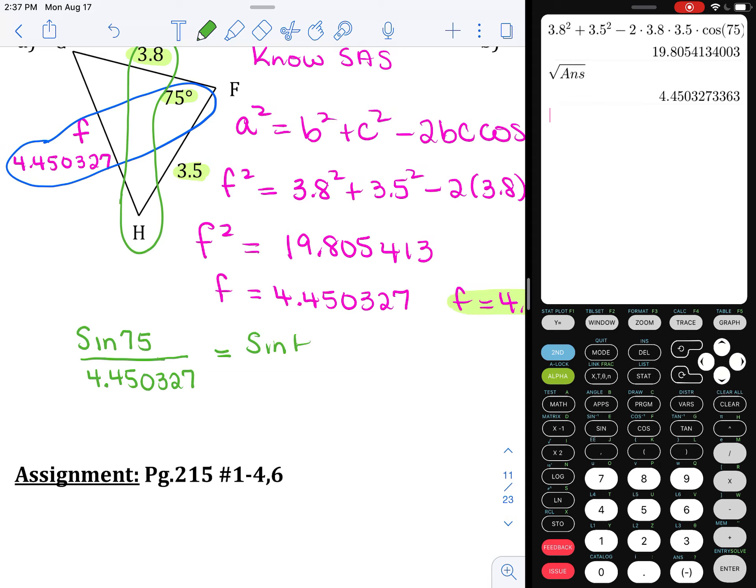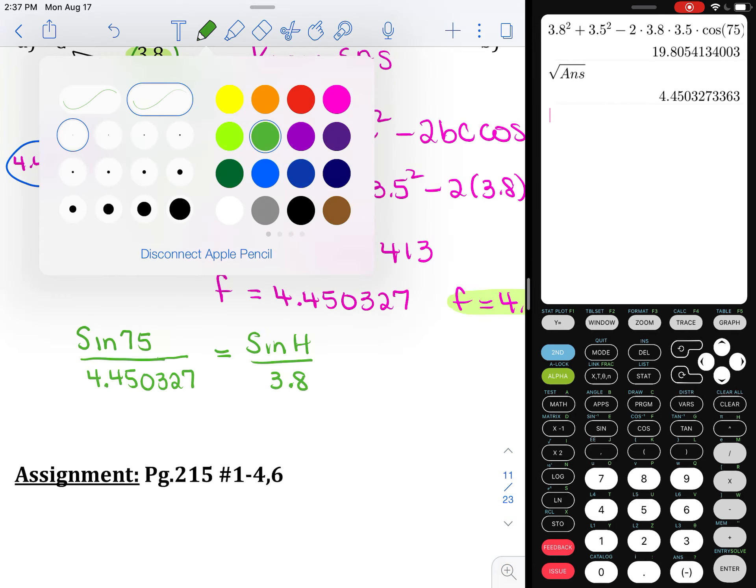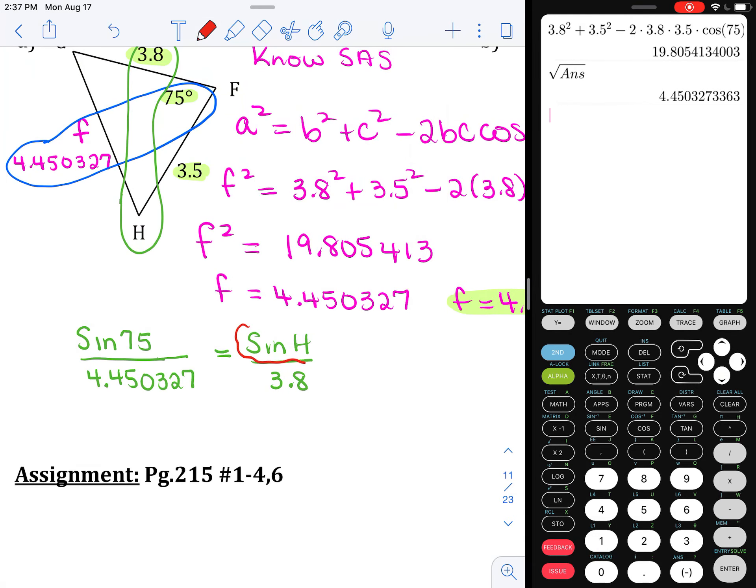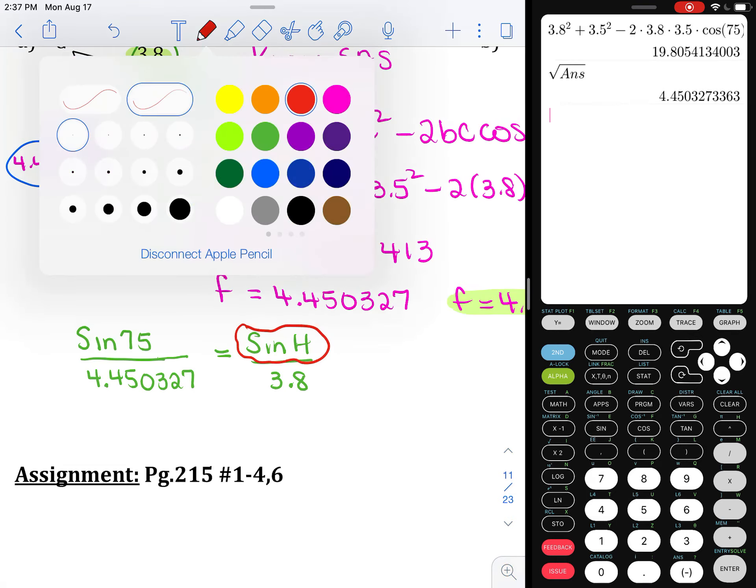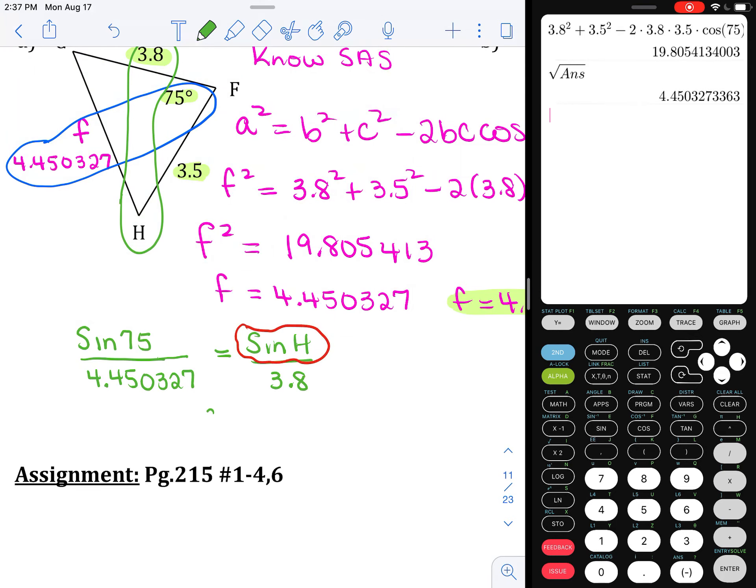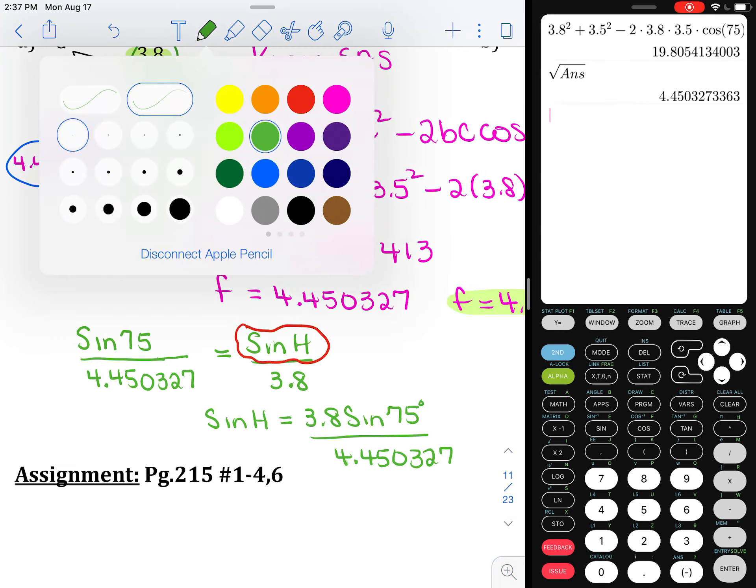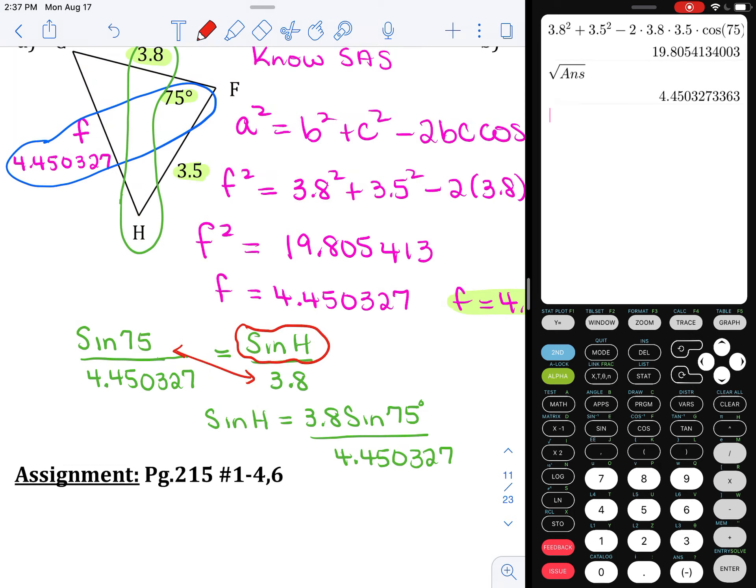So using that blue pairing, I'm going to go sine of 75 over his opposite. Don't use 4.5, use something more exact, 4.450327. I know that that's a pain, but we have to keep this as accurate as possible. Equal, equaling sine of the angle I want, sine of angle H, over his opposite, 3.8. Notice my unknown sitting right there in the top. So the sine of H, remember we will be going 3.8 times the sine of 75 divided by 4.450327. Remember what we're doing there? We multiply these two guys together. We divide by the 4.45 value.